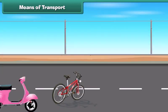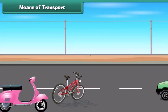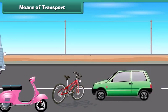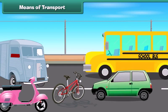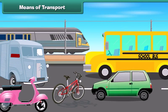Bicycles, scooters, cars, trucks, buses and trains are all examples of land transport vehicles.